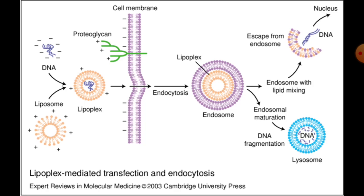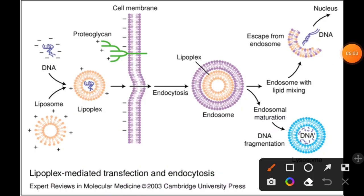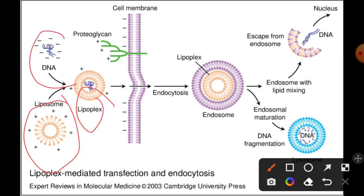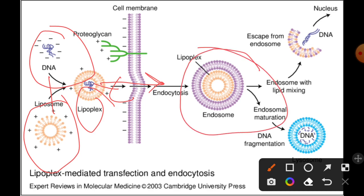In summary, a complex called the lipoplex is formed containing DNA surrounded by liposome, held together by electrostatic interaction. This cationic lipoplex is transferred to a specific cell using a monoclonal antibody, taken up via receptor-mediated endocytosis. Once inside, the cell engulfs the lipoplex in an endosome, and only if the lipoplex along with the DNA escapes before the lysosomal pathway activates can the gene of interest survive.